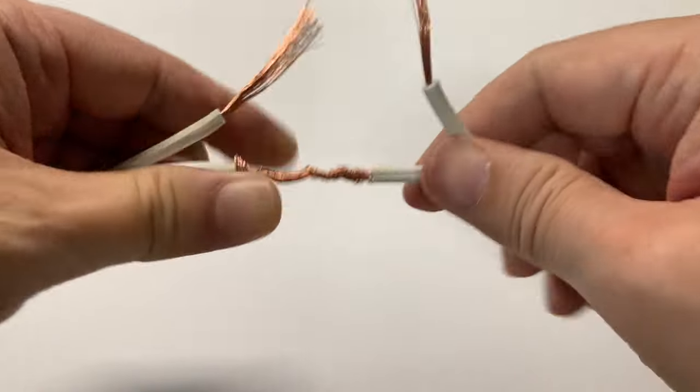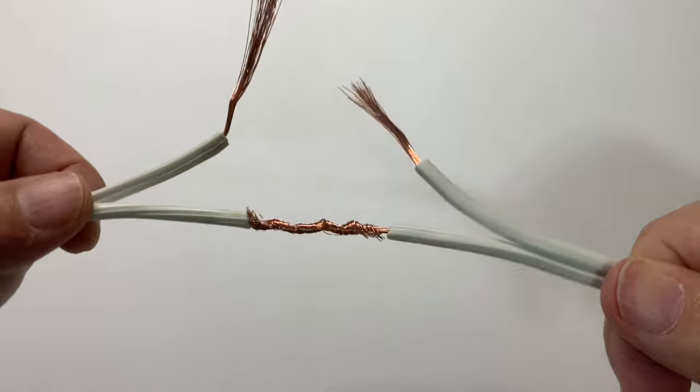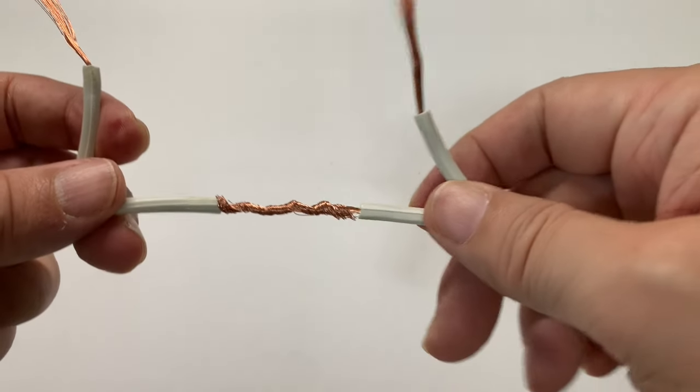When you're done, do a pull test. You'll find that the bind between the two wires is strong and cannot be loosened easily.